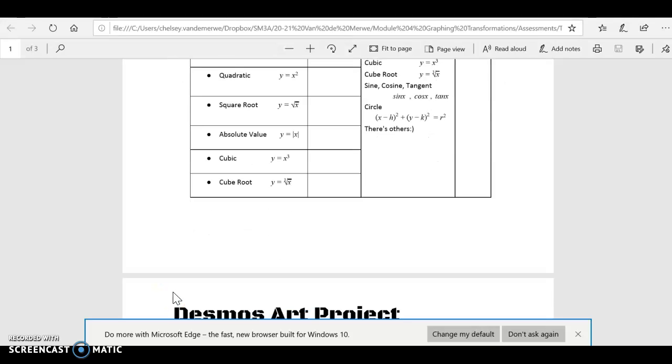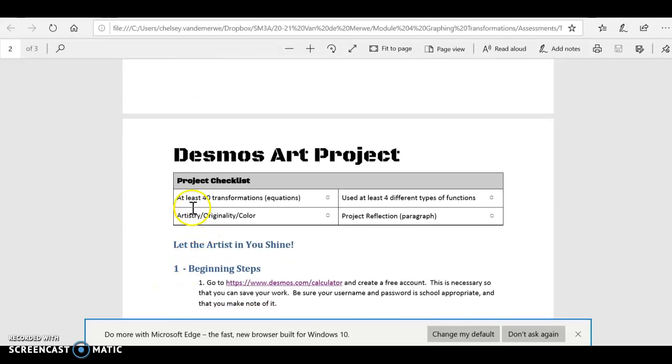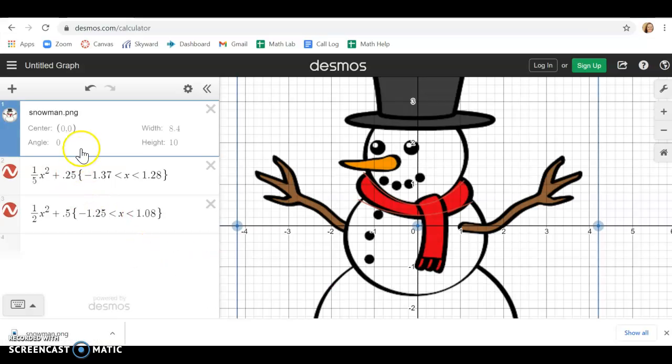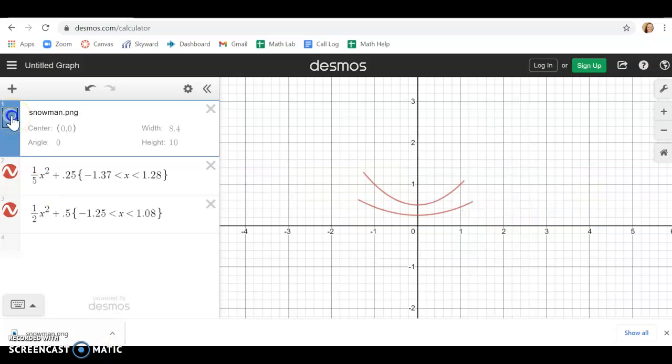Okay and then if you go down a little bit further on this here's your checklist. You have to use at least 40 transformations. So you have to use four different kinds of parent functions and you have to in the end have 40 different equations. That means that if you come here you're going to have at least 40 different equations kind of listed here on the left side of your page. So that by the end once you have all 40 in or more if you were to turn off the snowman picture I could look at that and say that is a snowman.